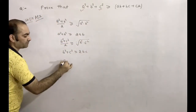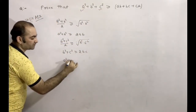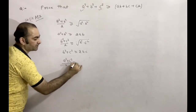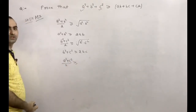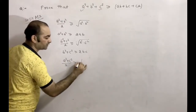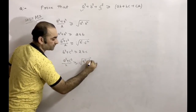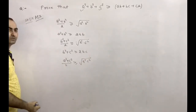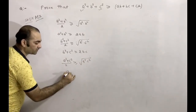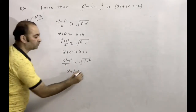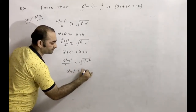(a² + c²) / 2 ≥ √(a² · c²). So a² + c² ≥ 2ac.